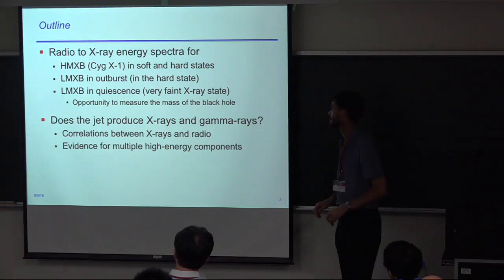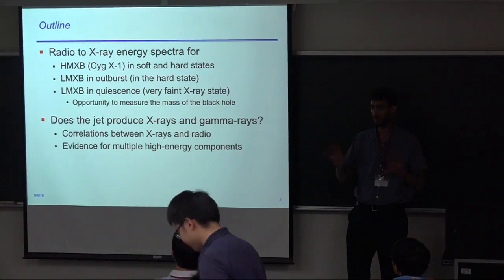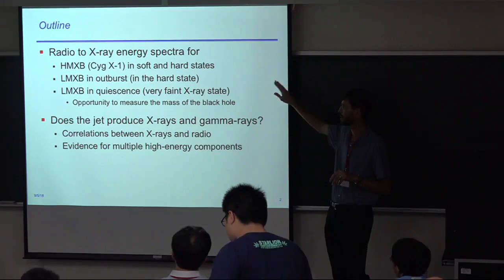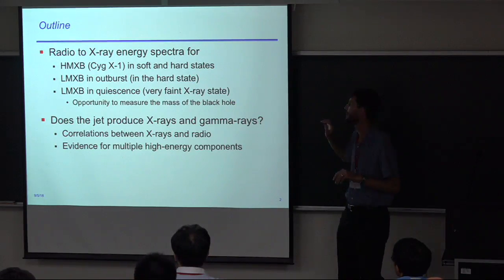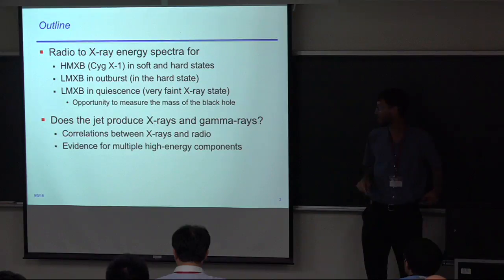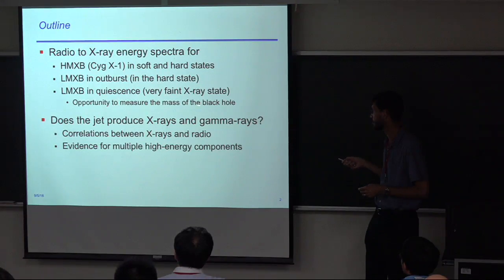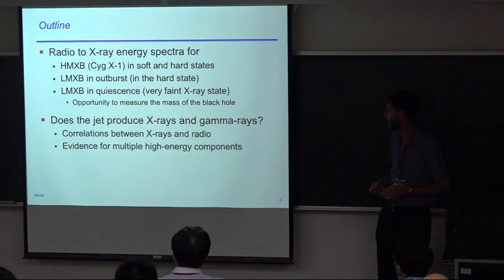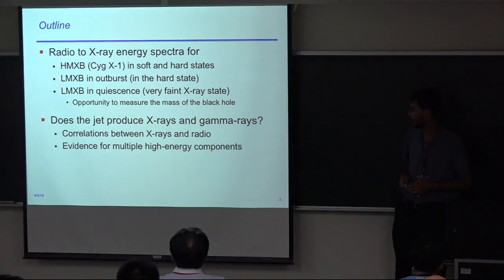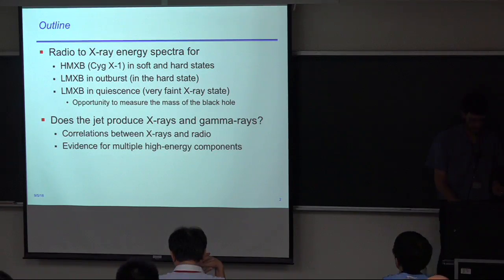Here's the outline of what I'll talk about. I'm going to show you what we see from radio all the way to X-ray, and I'll give you a few examples for three cases. For the high-mass X-ray binary, we're focusing on Cygnus X-1 in soft and hard states. Then low-mass X-ray binaries, and I'll close by talking about optical observations to measure the mass of the black hole. Then I'll discuss whether the jet produces X-rays and gamma rays, correlations between X-rays and radio, and possible evidence for high-energy components.